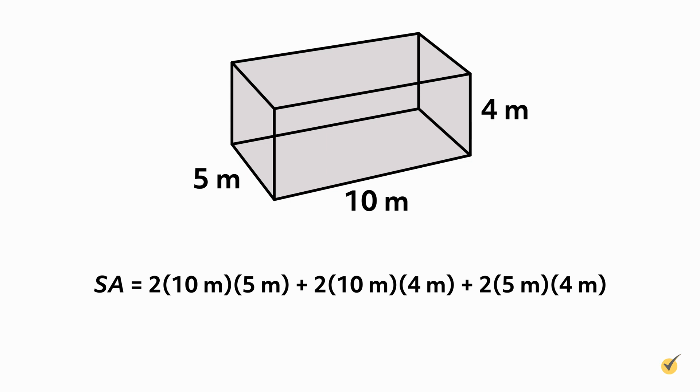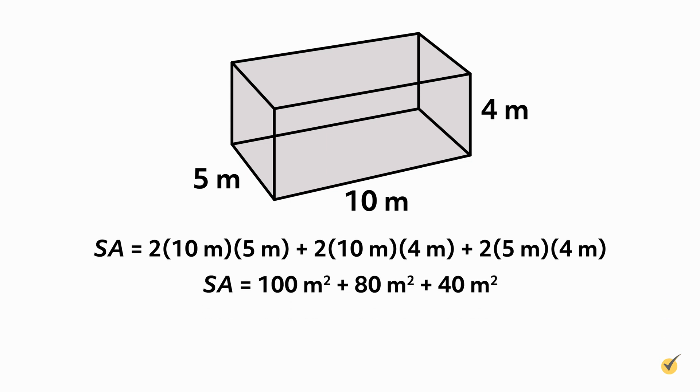Now, when we evaluate each term, we get that the surface area is equal to 100 meters squared, plus 80 meters squared, plus 40 meters squared. Notice that our units ended up being square units, which is what we need for the surface area.